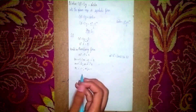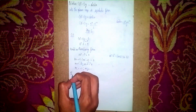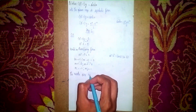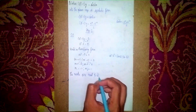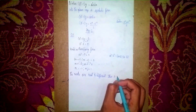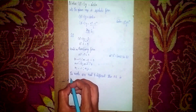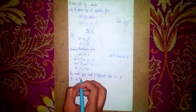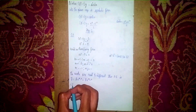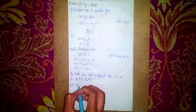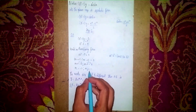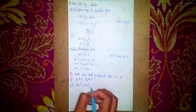The roots are real and different. For this case, the complementary function is y = A e^(m₁x) + B e^(m₂x). Substituting m₁ = -1 and m₂ = 1, the complementary function is CF = A e^(-x) + B e^x. This completes step 1.